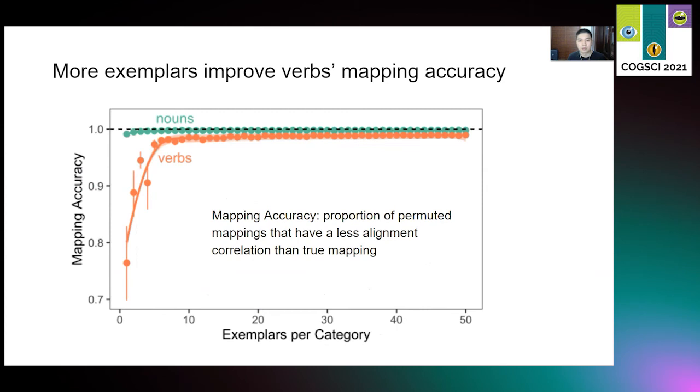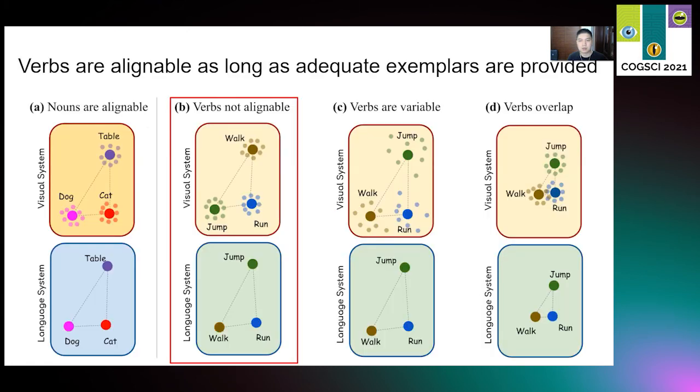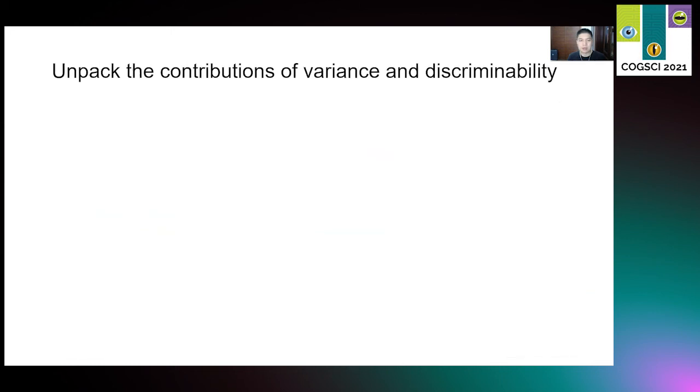To better understand this, we ask how many examples are required to construct good mapping. Here, y-axis is just the percentage number we reported in previous slides, which measures what proportion of permitted mappings are less well aligned than the true mapping, and the x-axis is the number of exemplars aggregated per visual category. As the number of exemplars used to construct visual prototypes increases, there is little benefit for nouns because accuracy is already close to ceiling. In contrast, for verbs, aggregating over even a small number of exemplars dramatically increases the mapping accuracy. In fact, once around 10 exemplars are averaged together, verbs are mapped nearly as accurately as nouns. This finding corresponds to panel B. We found that on the contrary to the hypothesis, verbs are alignable as long as adequate visual exemplars are provided. The finding is quite exciting, but to further understand why averaging exemplars into a prototype improves the mapping accuracy, we unpack the contributions of two sources of potential differences in visual categories.